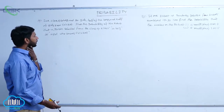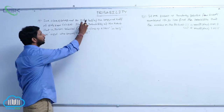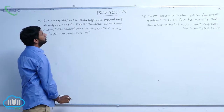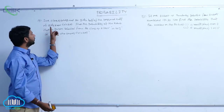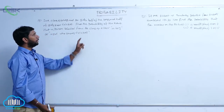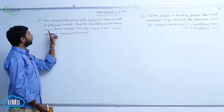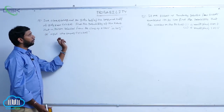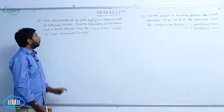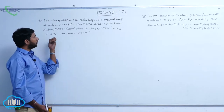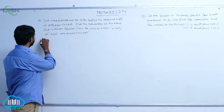In a class of 60 boys and 20 girls, half of the boys and half of the girls know cricket. Find the probability that a person selected from the class is either a boy or a girl who knows cricket.